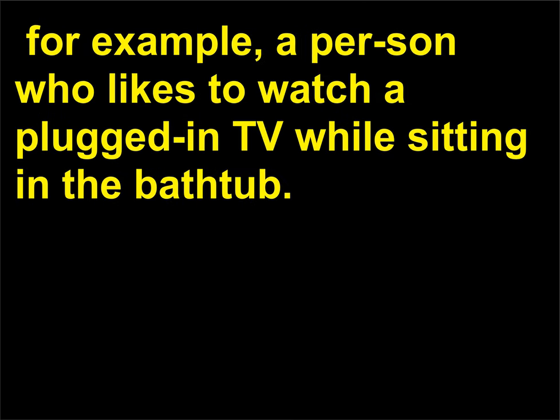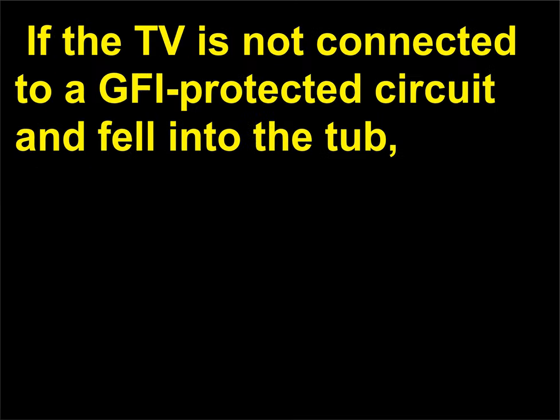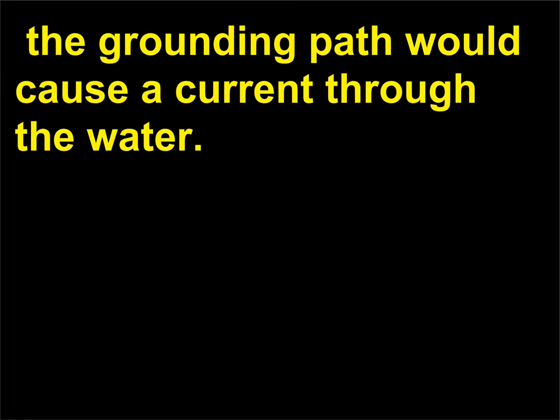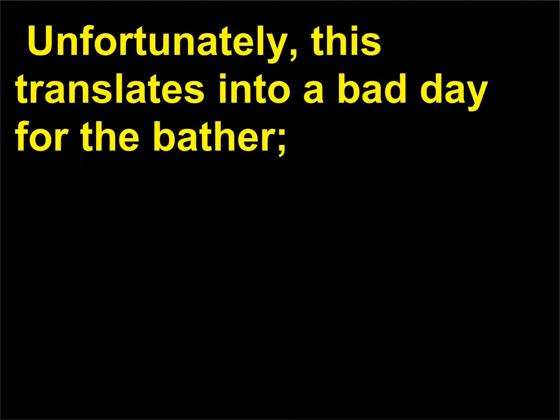For example, a person who likes to watch a plugged-in TV while sitting in the bathtub — if the TV is not connected to a GFI-protected circuit and fell into the tub, the water would come in contact with the 120-volt wires in the TV. With the metal plumbing of the tub connected to ground, the grounding path would cause a current through the water. Unfortunately, this translates into a bad day for the bather.